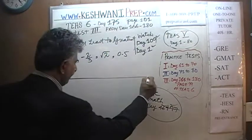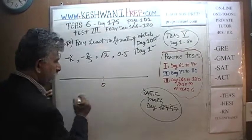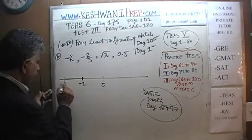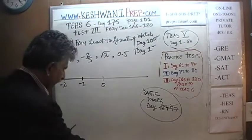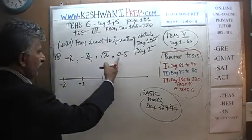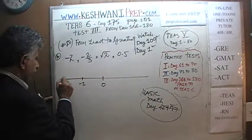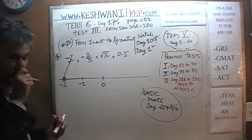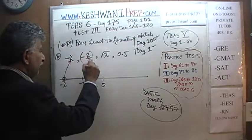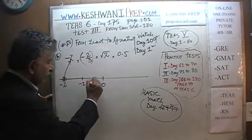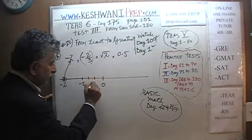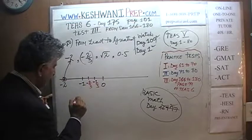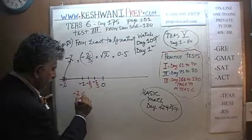Here is our number line. Here is 0, here is negative 1, and here is negative 2. As you can see, negative 2 is the smallest number here because the other numbers include two positive values. These are the only two negative numbers, and negative 2 falls furthest left — it is the smallest one. Where does negative 2/3 come? Negative 1/3 and negative 2/3 fall between 0 and negative 1. So negative 2 is smaller than negative 2/3.